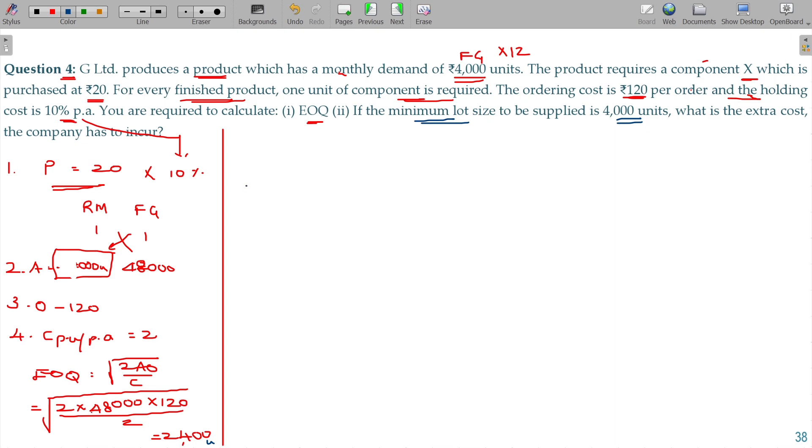Now, two costs are predominant - one is ordering cost, ordering cost, and the other is carrying cost. This is the formula.